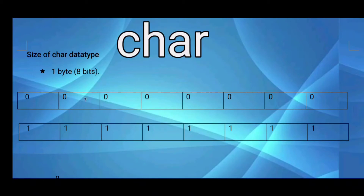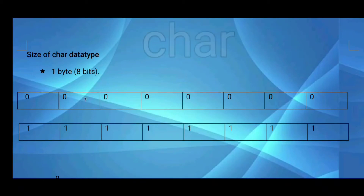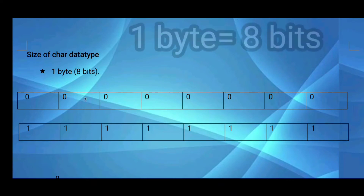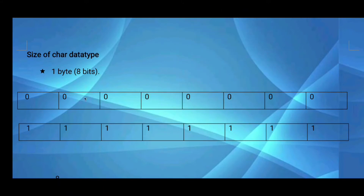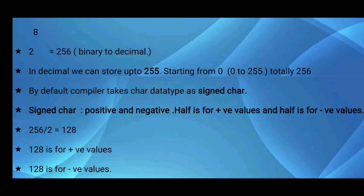The size of the char data type in C programming is one byte, that is 8 bits. The minimum value stored in 8 bits is 0 (all 0s in 8 bits). The maximum value that can be stored in 8 bits is all 1s in 8 bits. If you convert that binary number to decimal, you get 255. So we can store up to 255 in the character data type — the computer starts from 0, so 0 to 255, totaling 256 values.